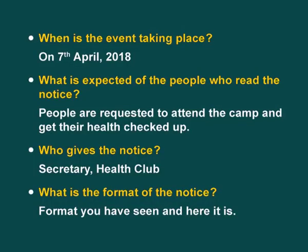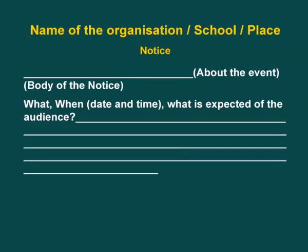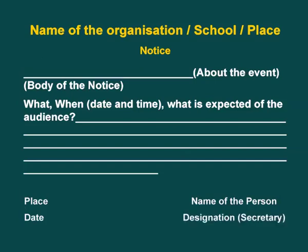Now let us look at the format of the notice. You have seen it already and here it is again. The first line says: name of the organization, oblique school, oblique place, and then you write the word notice and then the main event. Now we come to the body of the notice. We have already discussed about the three W's — what, when, and where — including date and time, and what is expected of the audience. After completing the body, on the left-hand side write the place and date of giving the notice, and on the right-hand side write the name of the person and their designation — for example, secretary or president.